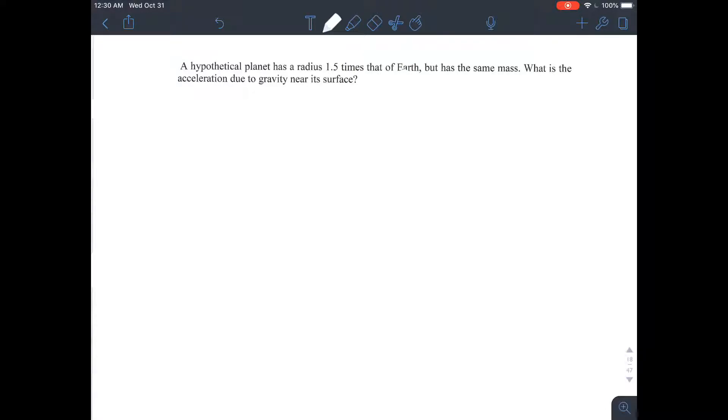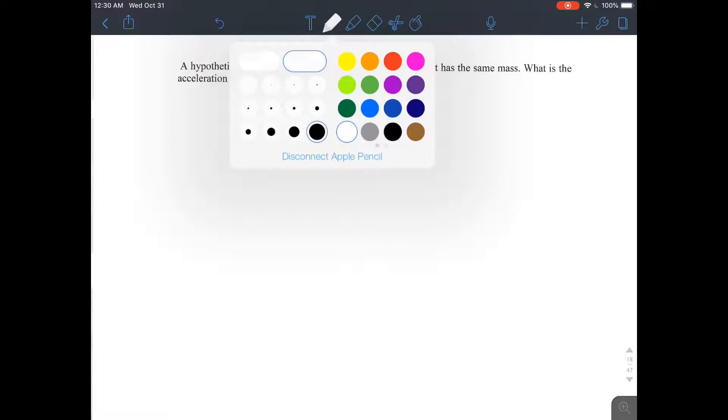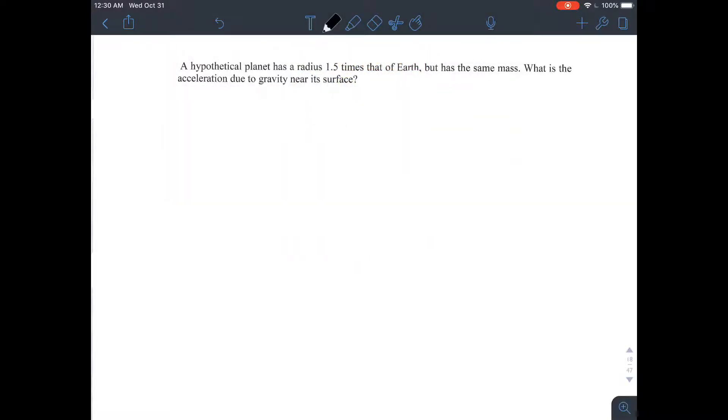Okay, ignore some junk that I'm just erasing right now. So the problem says there is a planet with a radius 1.5 times that of Earth, but the mass is the same. What is the acceleration due to gravity near the surface?